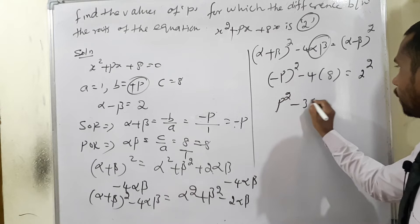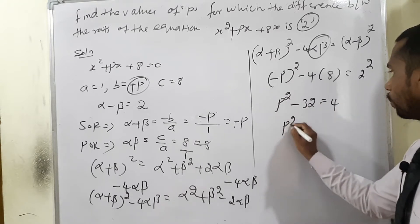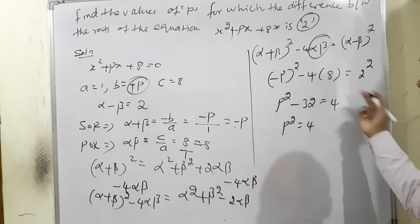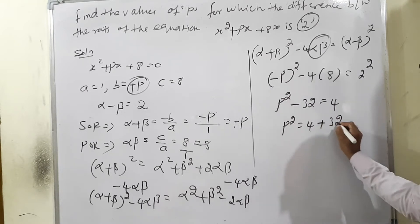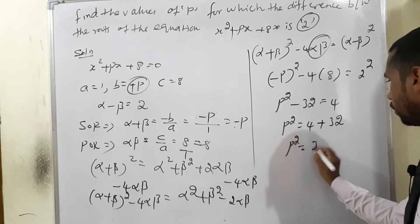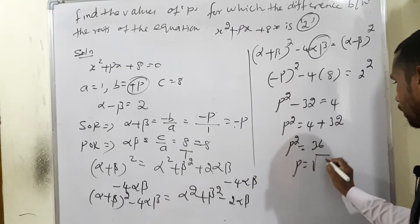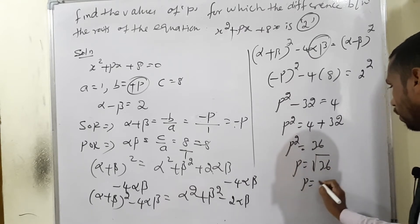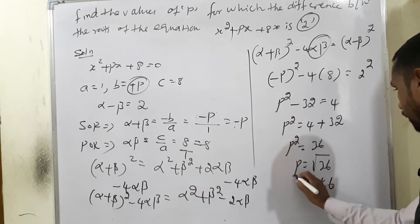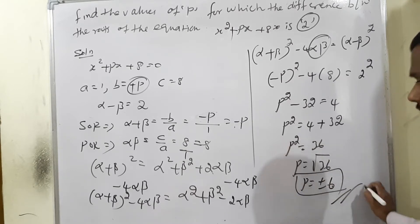Therefore P² = 4 + 32 = 36, so P = ±6. This is our answer.